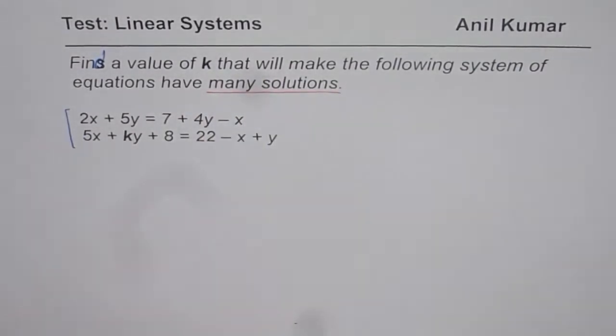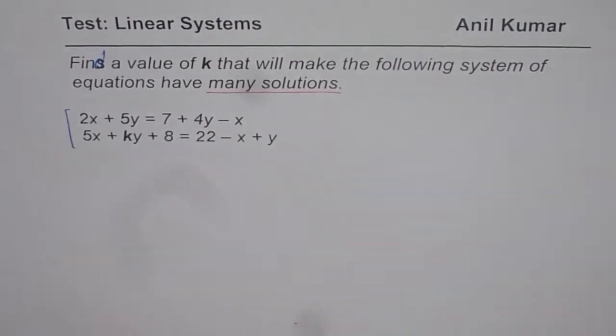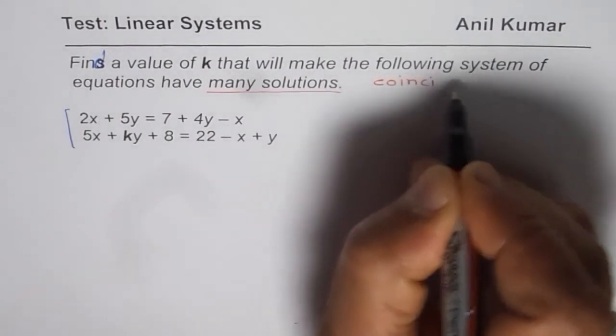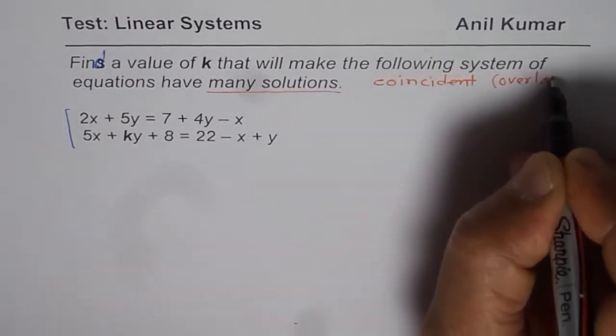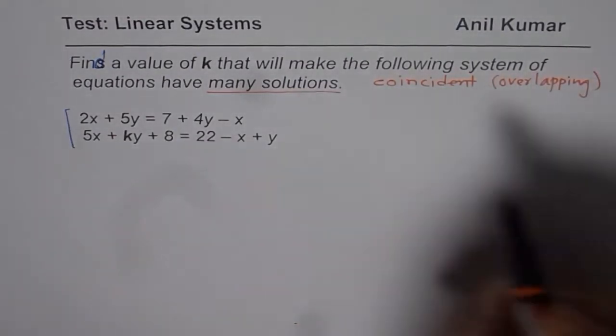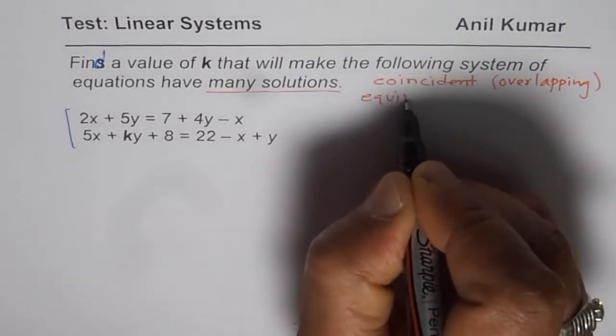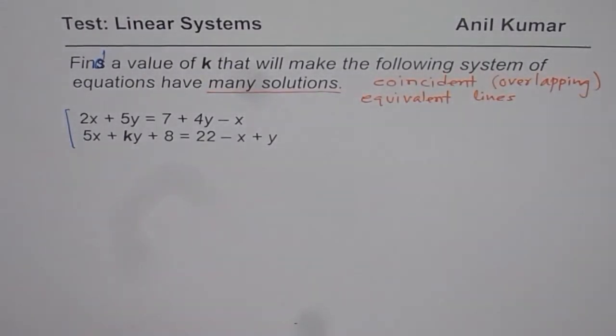Now, many solutions means what? It means that the lines are overlapping. So they are coincident lines. That means we are having coincident or overlapping, or same lines. So you can also say equivalent lines. They are actually exactly the same lines. They overlap one over the other. Only then they can have many solutions. So that is the concept.